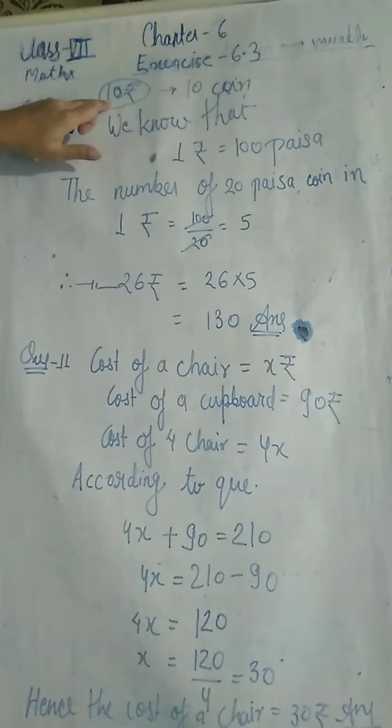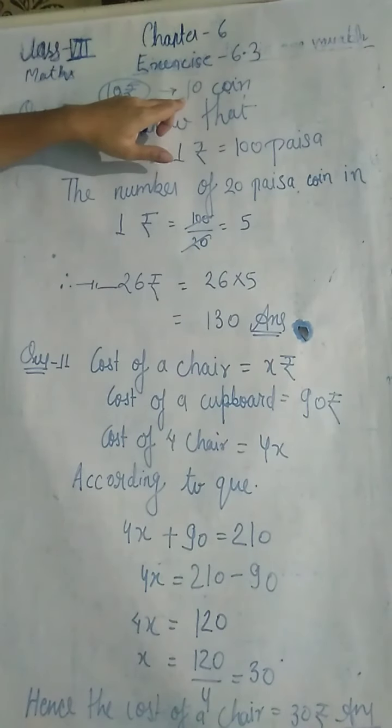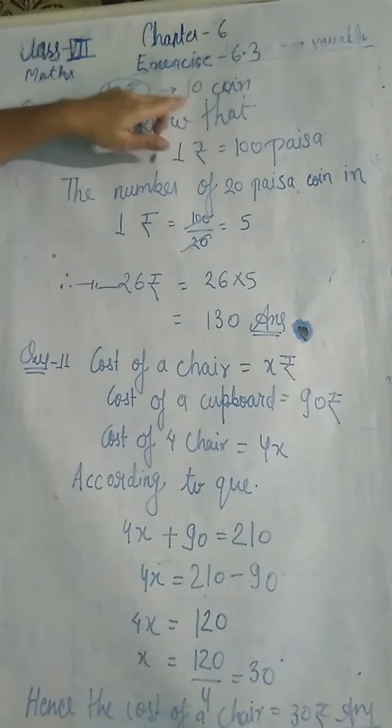Value alag hai, number of coins alag hai — yeh difference samajh mein aaya? Value toh yeh hai, lekin yahan number of coins ki baat ho rahi hai. Theek hai?